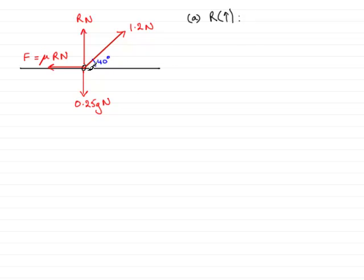Looking at the resultant force on the ring in the upward direction, we're going to have r acting upwards, so all of r is going to act upwards. Then we've got the component of the 1.2 newtons, the vertical component, the one acting in this direction.